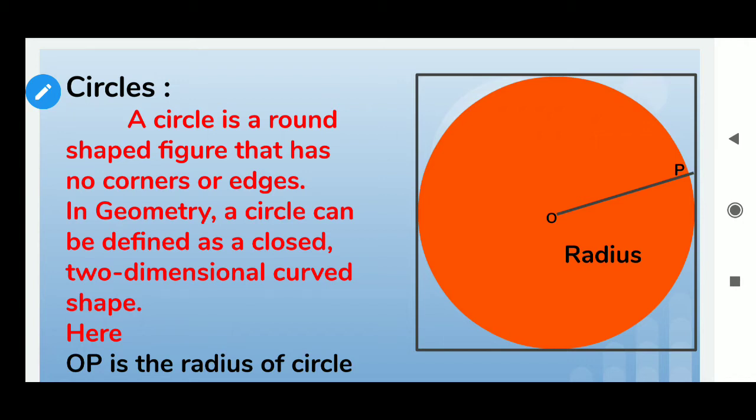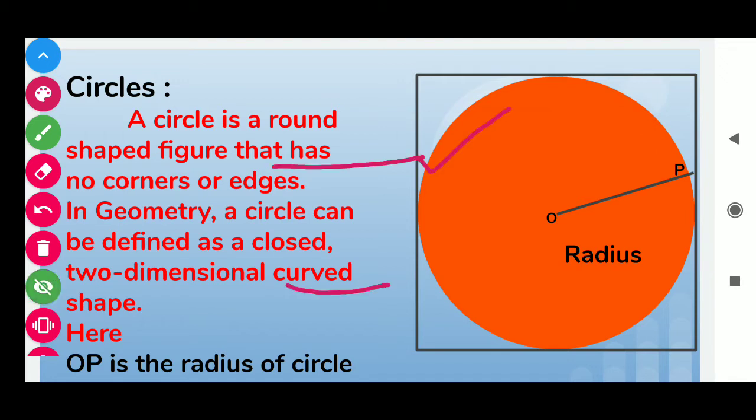A circle is a round-shaped figure that has no corners or edges. In geometry, a circle can be defined as a closed two-dimensional curved shape.